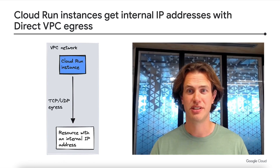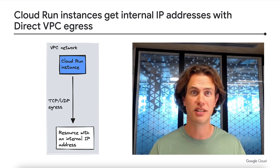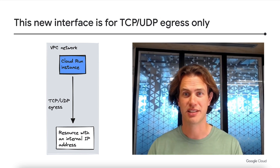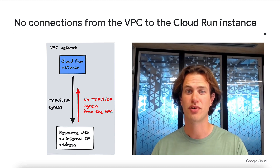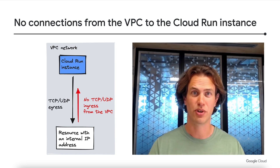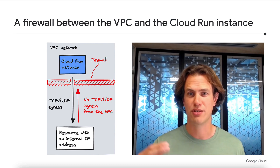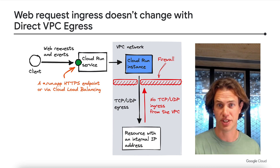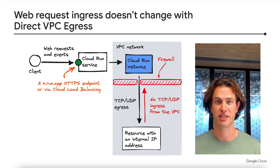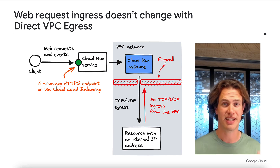When you enable direct VPC egress on a Cloud Run service, the Cloud Run instances get internal IP addresses on the VPC network. This new interface can only be used for TCP and UDP egress. You can use it to create new connections from the VPC network back to the Cloud Run instance — think of this as a firewall in front of the Cloud Run instance. The firewall allows outbound connections only and no inbound traffic from the VPC. But the other ingress path doesn't change with direct VPC egress — web requests to the HTTPS endpoint of the Cloud Run service are still routed to Cloud Run instances in the same way as before.